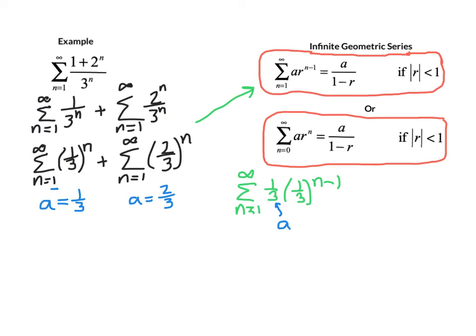Pretty much plug in and go now. On the first case, the summation is a, 1 third, divided by 1 minus r, 1 minus 1 third. For the second sum, we have 2 thirds divided by 1 minus 2 thirds. And we'll clean up our arithmetic: 1 third over 2 thirds plus 2 thirds over 1 third.